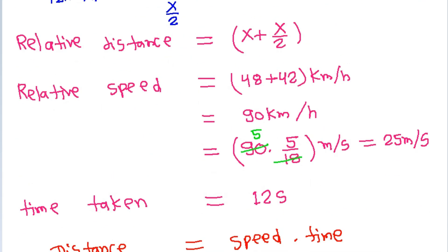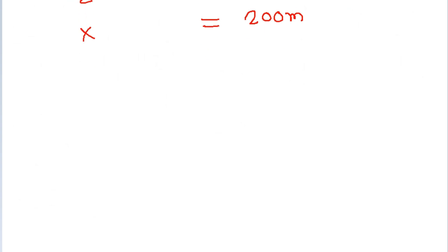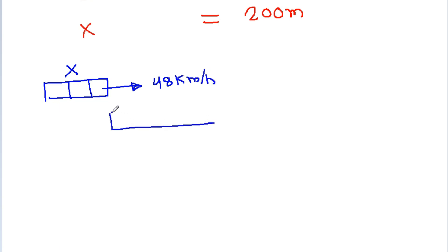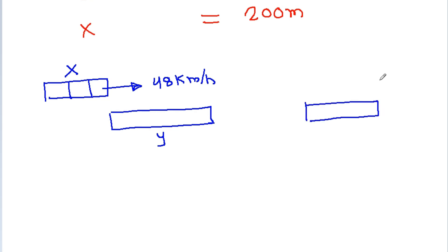We are also given that the train passes a railway platform in 45 seconds. The train has length x meters and travels at 48 km per hour. Suppose the platform length is y. So this length is y and this length is x.